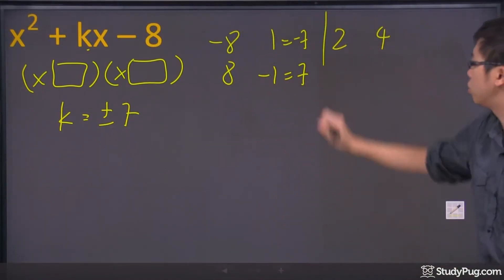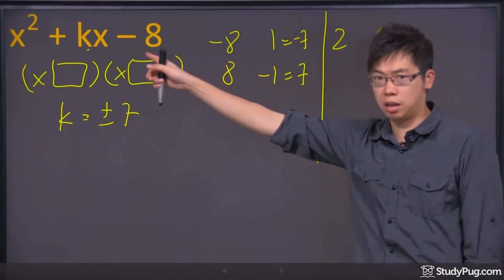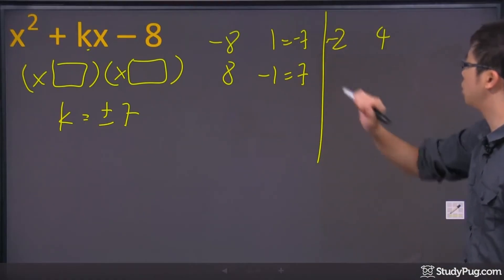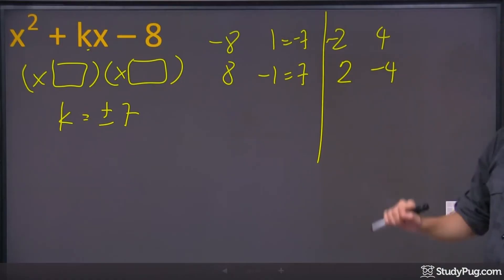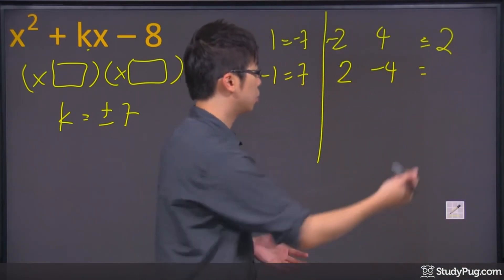Now, on the other side, we have 4 and 2 to try, or 2 and 4. Now, 4 times 2 does give me 8. But one of them has to be negative. So it could be negative 2 and 4, or 2 and negative 4. Now, if you add them together, it's either 4 minus 2, which is 2, or 2 minus 4, which is negative 2.